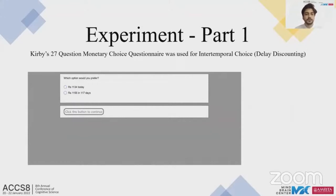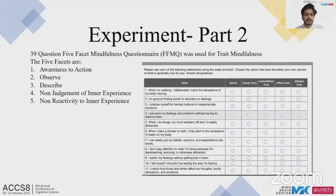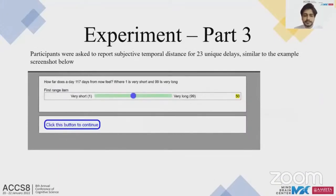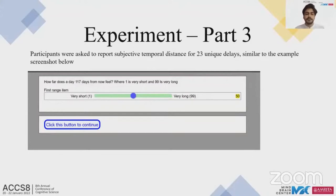Trait mindfulness was measured using the Five Factor Mindfulness Questionnaire (FFMQ). Temporal distance was measured by asking participants 'How far does a day X days from now feel?' on a scale of 1 (very near) to 99 (very far), for 23 unique delays — the same delays as in Kirby's MCQ — presented in random order. During analysis, five participants were excluded for answering the same option for all questions in either the MCQ or temporal distance task.